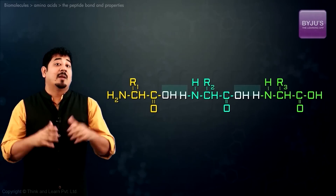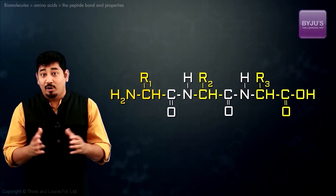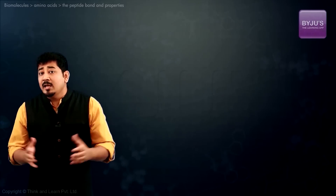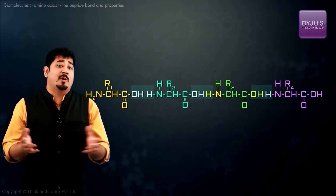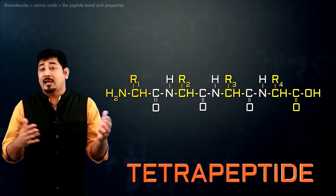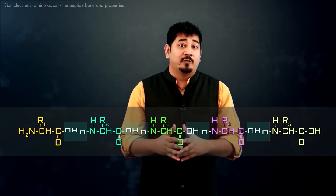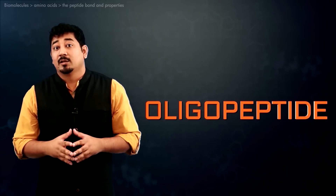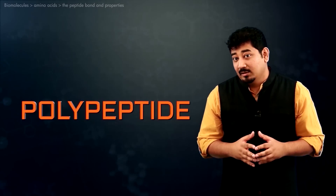Three amino acids can be joined by two peptide bonds to form a tripeptide. Similarly, four amino acids can also be linked to form a tetrapeptide and five to form a pentapeptide and so on. When a few amino acids are joined in this fashion, the structure is called an oligopeptide. When many amino acids are joined, the product is called a polypeptide.